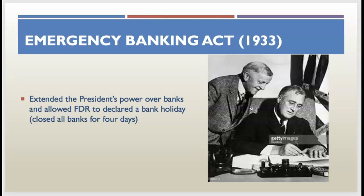The Emergency Banking Act passed in 1933 and was designed to get the country back on its feet. The legislation was actually written by Treasury staff during Hoover's administration. It allowed failing banks to catch their breath and be appropriated money to stabilize the financial system. It expanded the president's power over banks and allowed FDR to declare a bank holiday — essentially closing all banks for about four days to prevent people from taking their money out and to prop up failing banks.